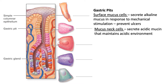The second type of cell in the gastric pit is the mucus neck cells. They secrete an acidic mucin — in contrast to the surface mucus cells, which secrete alkaline mucus. The mucus neck cells help maintain that acidic environment created by hydrochloric acid. Both types of cells within the gastric pits serve lubrication; the mucus they produce protects the stomach lining from abrasion.